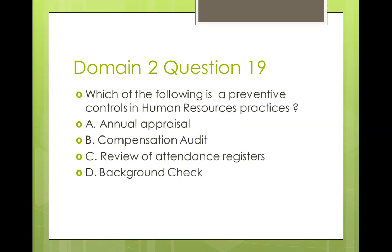Question nineteen: which of the following is a preventive control in HR practices? A) An appraisal, B) compensation audit, C) review of attendance registers, D) background check. An appraisal is done at end of year or mid-year — not a preventive control. A compensation audit is detective. A review of attendance registers is also detective — you are checking whether people are coming to work after the fact. Only background check is a preventive control in HR. The answer is D.